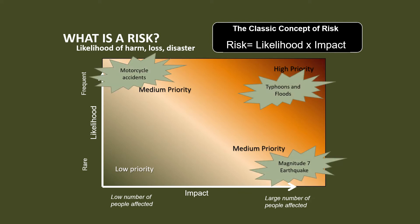So if it's a hazard that would frequently happen and may involve a large number of people affected, it will be tagged as high priority and a lot of action would be done to address this hazard. This definition is highly focused on hazards. Conventional strategies are focused on reducing the likelihood and impact of the hazard, either through disaster preparedness and engineering solutions. That's it.